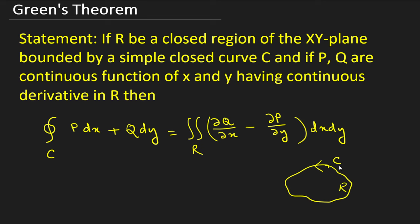It's a simple but closed curve, and the area or region inside this C is R. And P and Q are two functions, both dependent on x and y. So P is a function of x and y, similarly Q is also a function of x and y, having continuous derivatives — meaning their partial derivatives ∂P/∂x, ∂Q/∂x, ∂P/∂y, and ∂Q/∂y all exist.